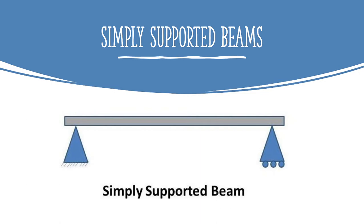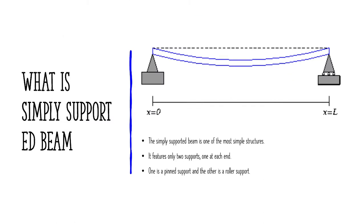This is a simple diagram for the simply supported beam. A simply supported beam is one of the most simplest structures throughout all the beams. The beam is connected at each end with two supports — one end is pinned and another is a roller support. Upon acting any force on the beam, it undergoes a deflection.